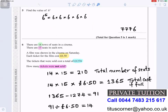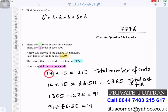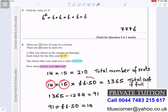Question six: there are 14 rows of seats in a cinema and 15 seats in each row. A film was shown on Saturday and each ticket cost £6.50. The tickets sold cost a total of £1,274. To find the total number of seats, multiply 14 rows by 15 seats to get 210 seats. Then multiply 210 by £6.50 to get the total cost if the cinema is full.